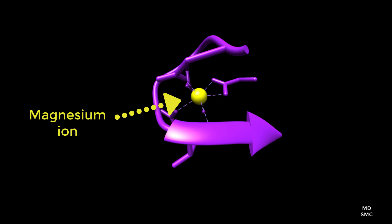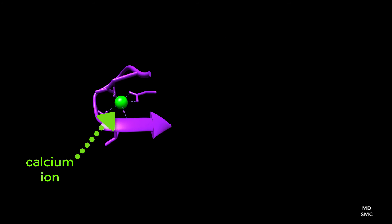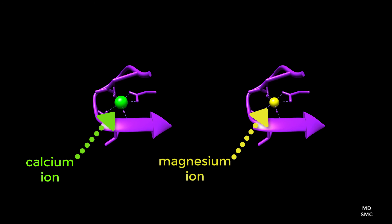In comparison, a magnesium ion, colored in yellow, can interact with the four sites of calmodulin. One can notice that the calcium ion shown is larger than the magnesium ion.